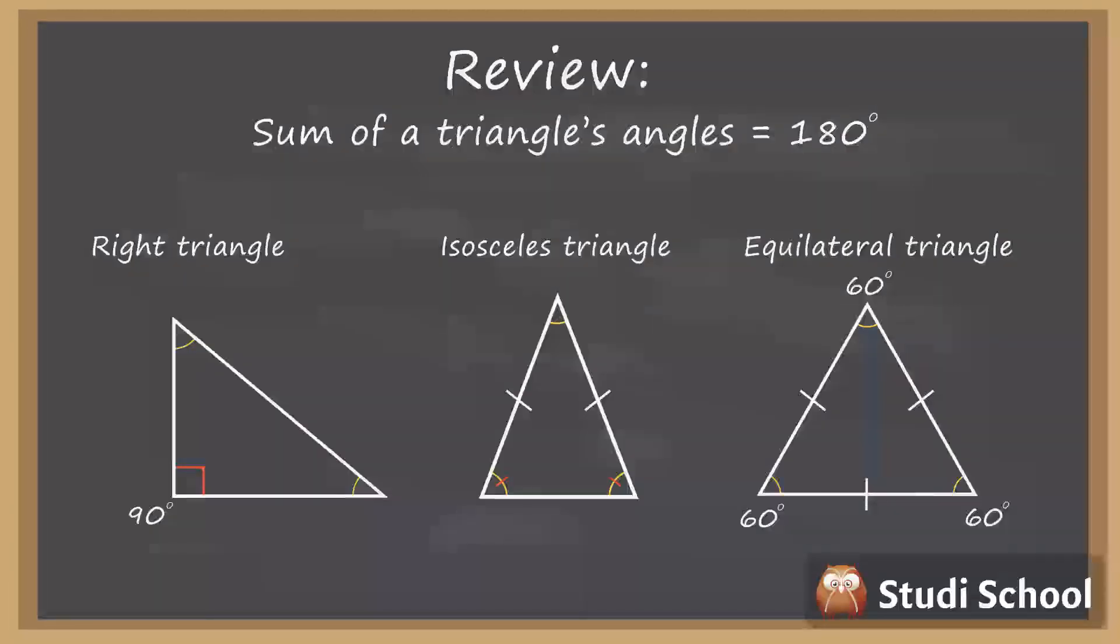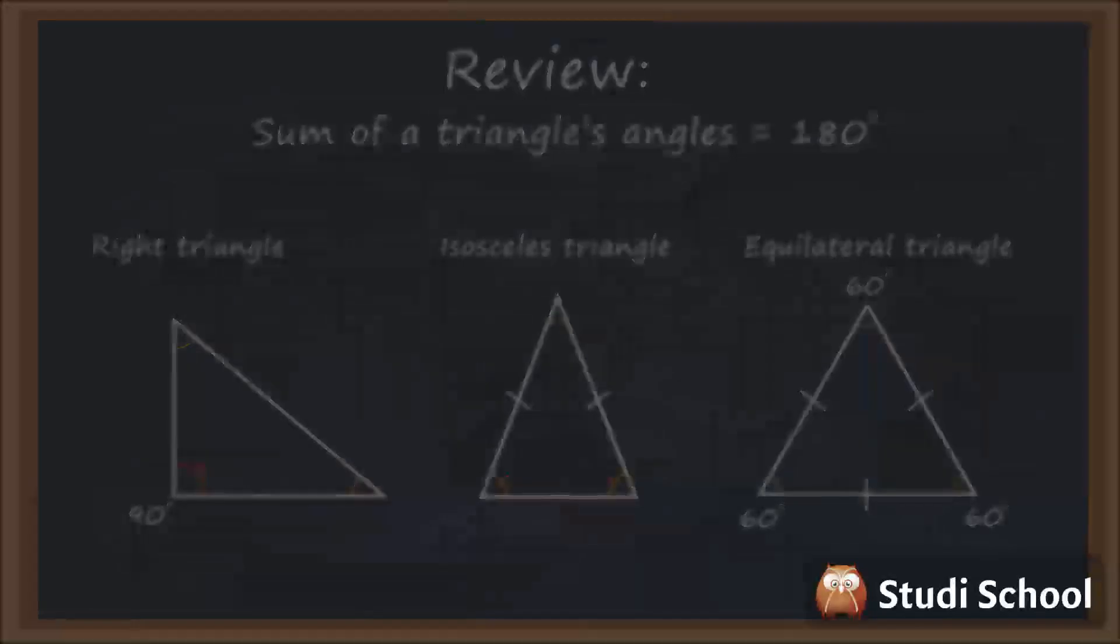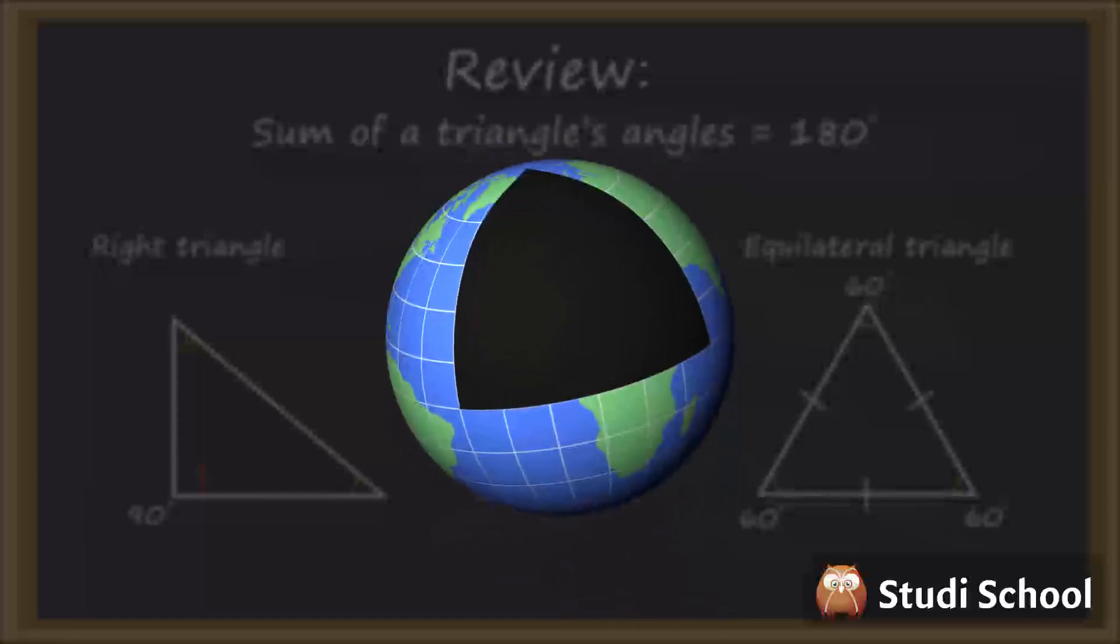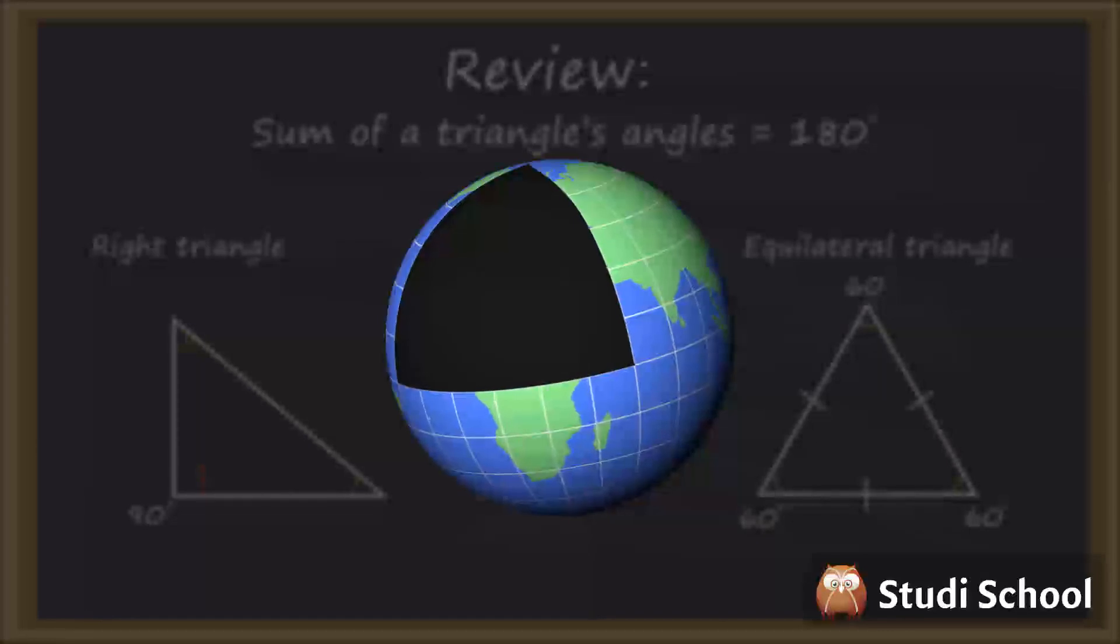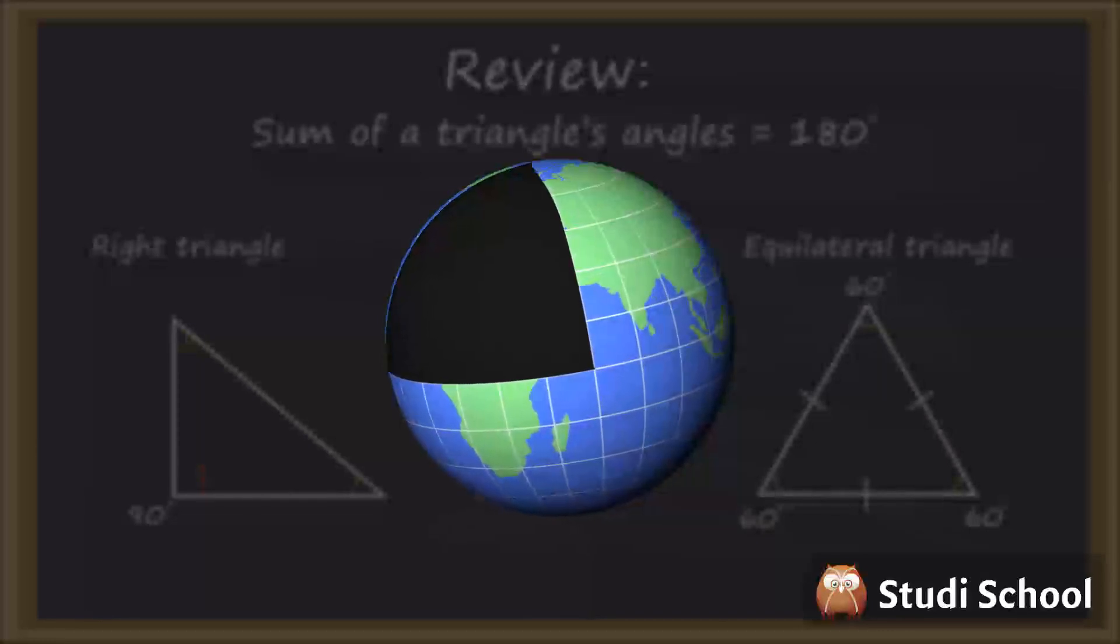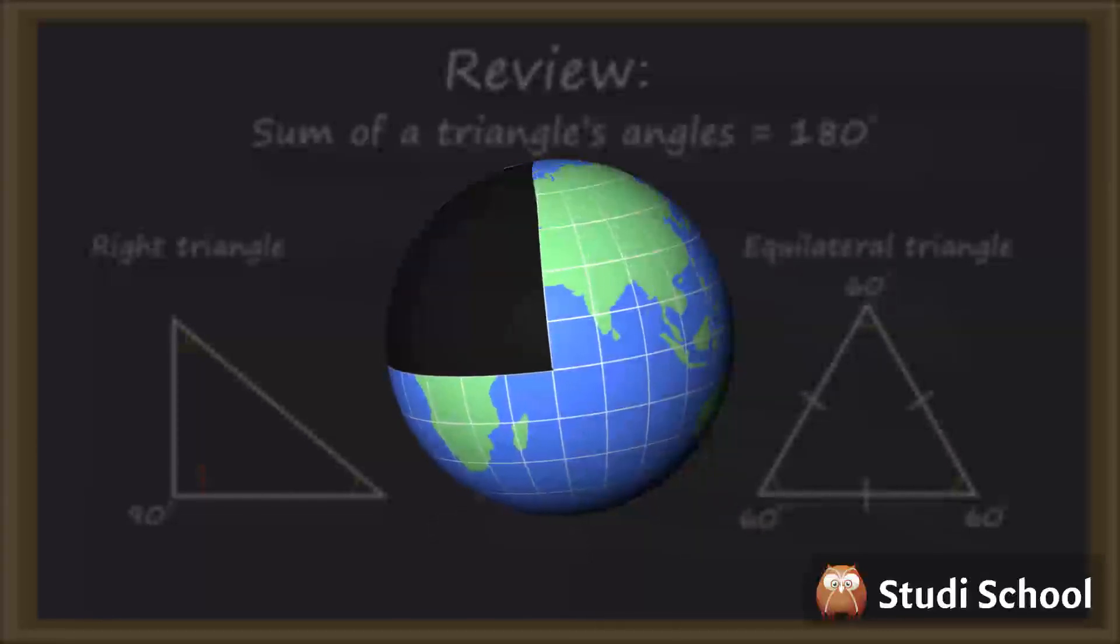All of this is true for triangles drawn on a flat surface. Try drawing a triangle on a ball—then almost anything can happen. You can draw a triangle with three right angles, for example, but then you are no longer in Euclidean geometry.